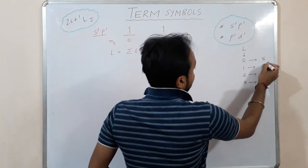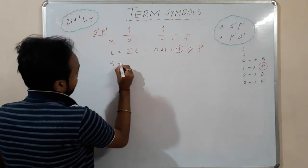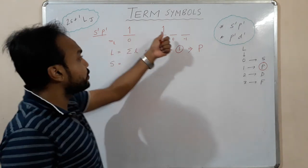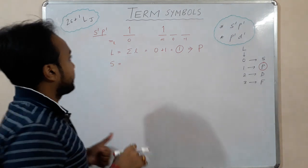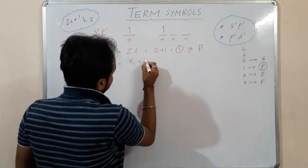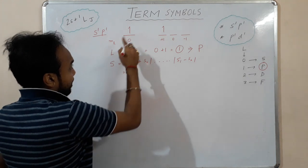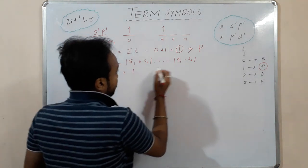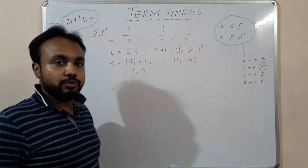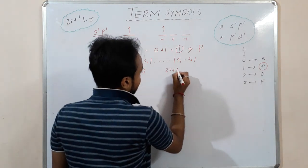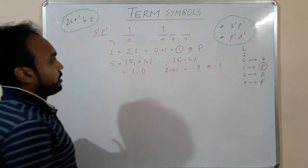Now coming to the S value. We have two electrons in different orbitals, so we can have the same spin or opposite spin. S = s₁ + s₂ to s₁ − s₂, giving ½ + ½ = 1 or ½ − ½ = 0. So S can be 1 or 0, and the corresponding 2S+1 values are 3 or 1.